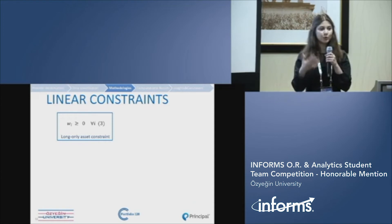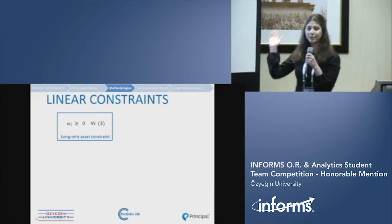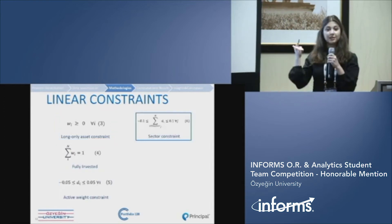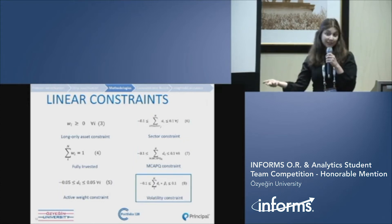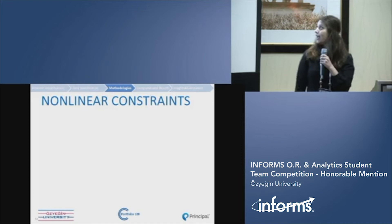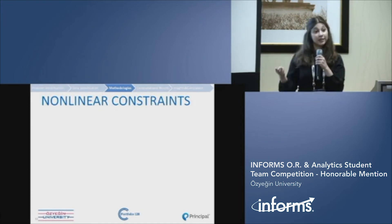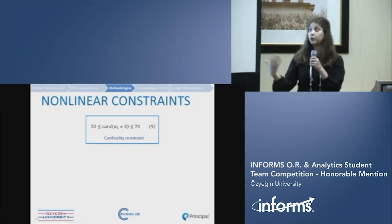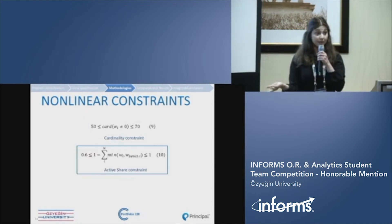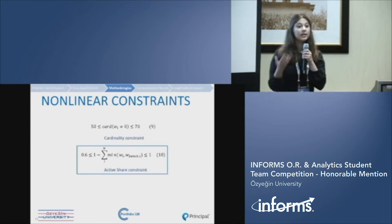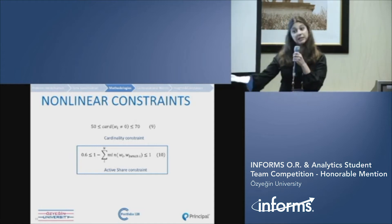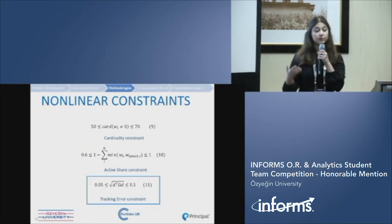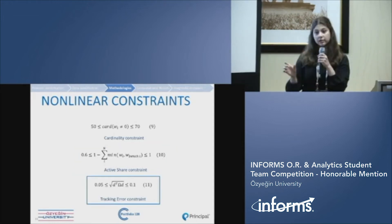As we are the last team, you are all familiar with the 16 constraints — let's recall quickly. We have a long-only asset constraint, fully invested constraint, active constraint, sector constraint, mcap quantile constraint, and a volatility constraint including a beta value. Now the sophisticated part: we have three nonlinear constraints. First, a cardinal constraint allowing trackable management, set between 50 and 70 assets. Second, an active share constraint determining whether we pursue passive or active management. Third, a tracking error constraint to control error limits within specified bounds.